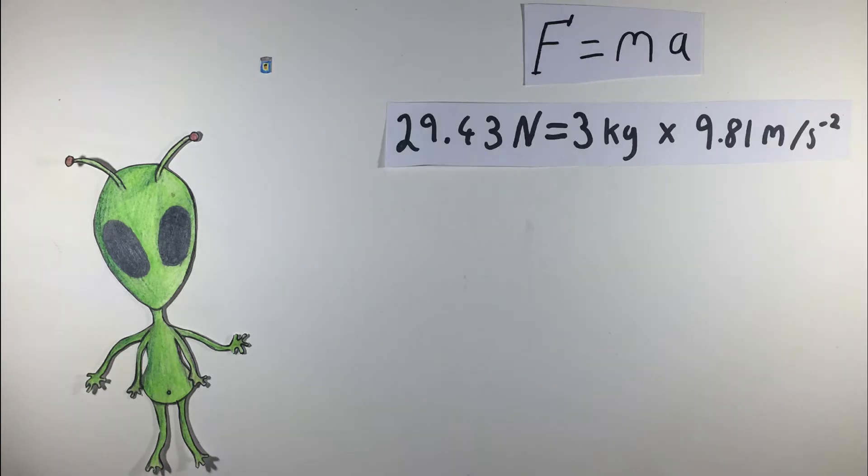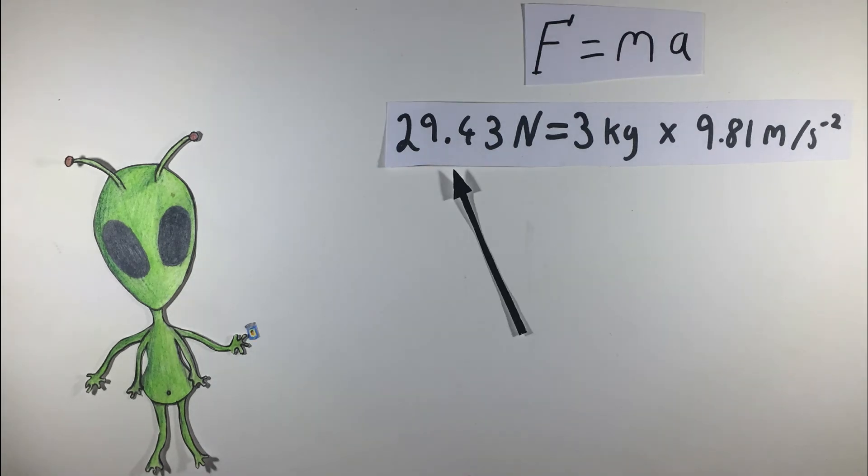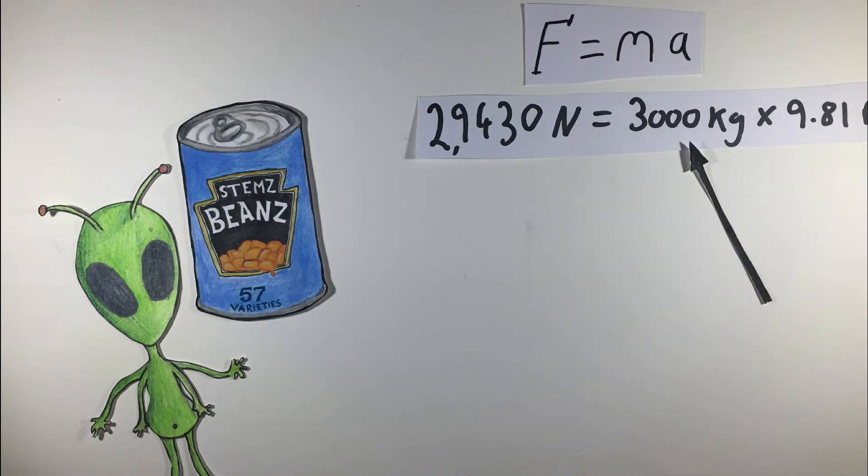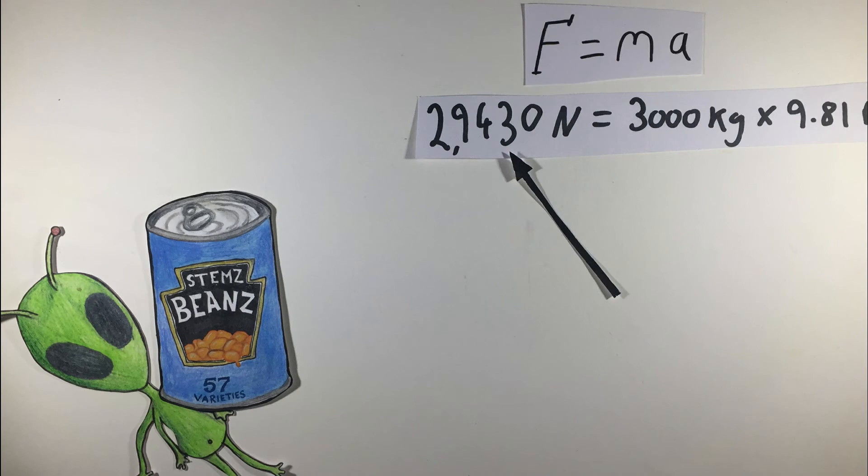So if a tin of beans weighing three kilograms is dropped on Earth, it will fall with a force of 29.43 Newtons. Whereas a tin weighing 3,000 kilograms is dropped, it will fall at a force of 29,430 Newtons.